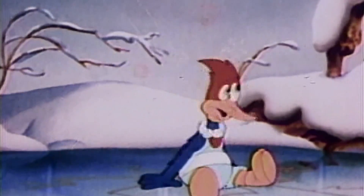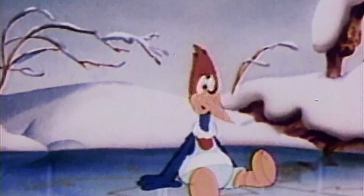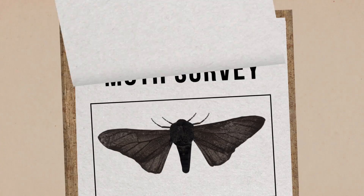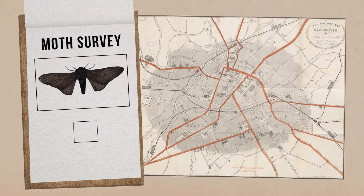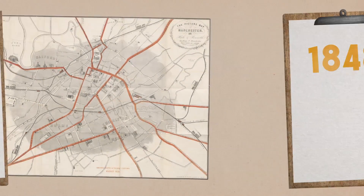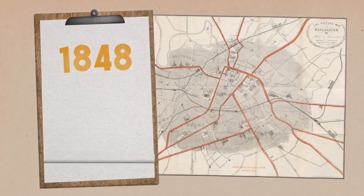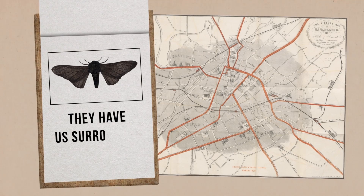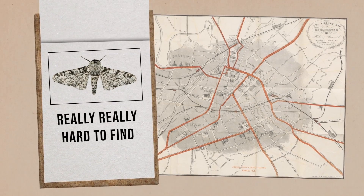Darwin pointed out that when an environment changes, a characteristic can suddenly shift from being an advantage to a disadvantage and vice versa. In 1811, a famous survey of moths around the burgeoning town of Manchester recorded no melanic or black-winged moths. 37 years later, in 1848, another survey discovered huge numbers of these creatures and far fewer white-winged moths.